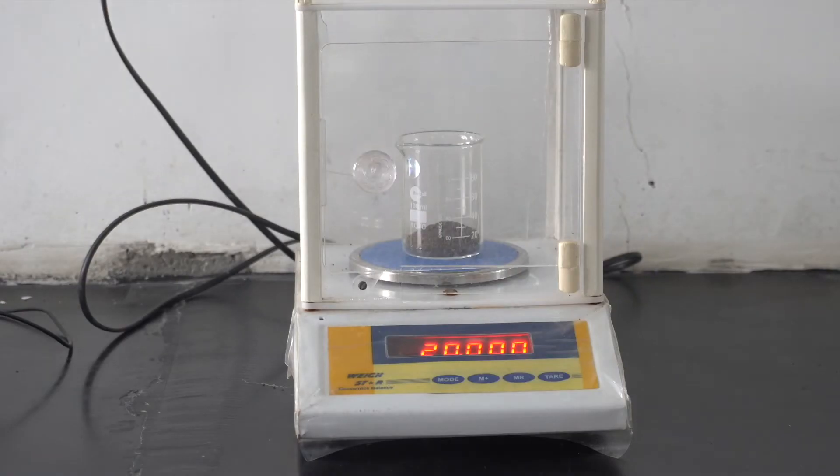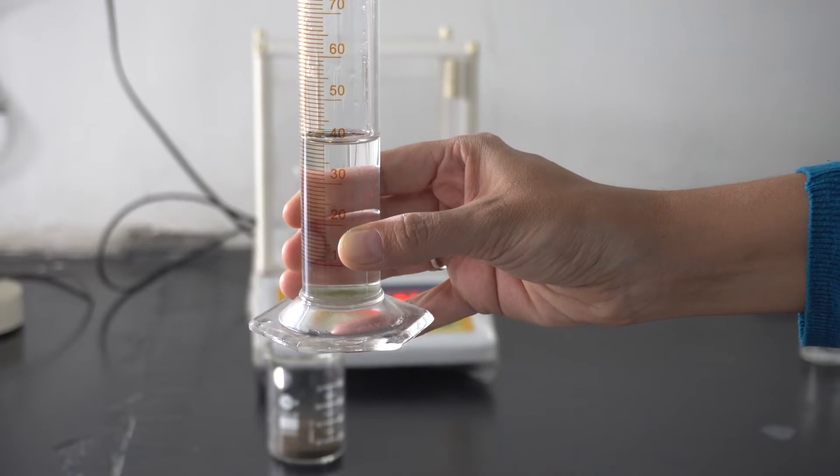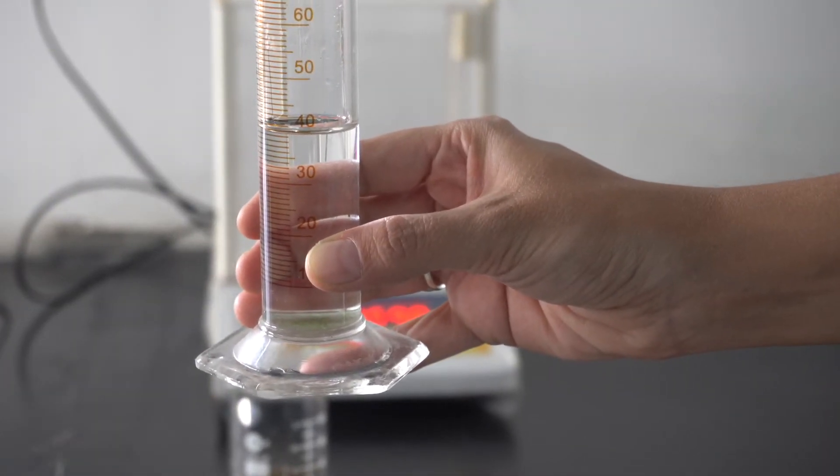To measure 20 grams of soil sample we will require a weighing balance. First, weigh 20 grams of soil sample into a 100 ml beaker and 40 ml of distilled water in a measuring cylinder.